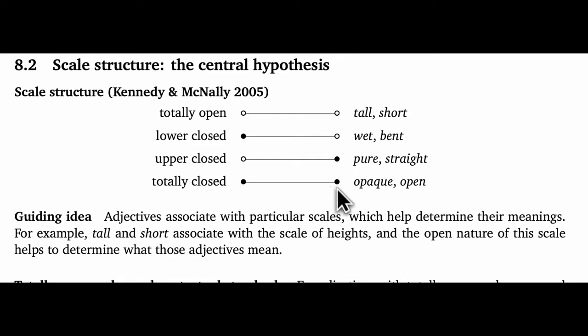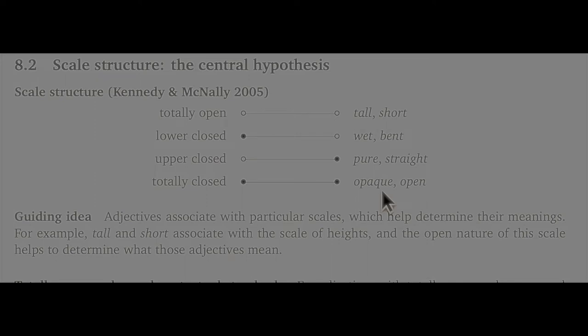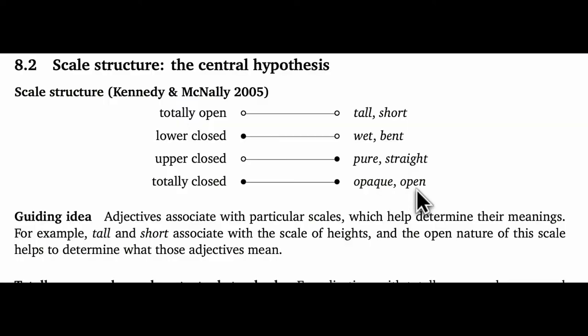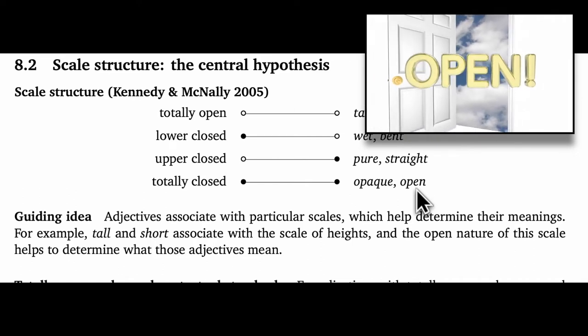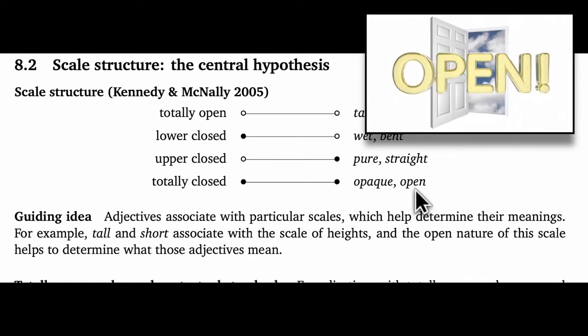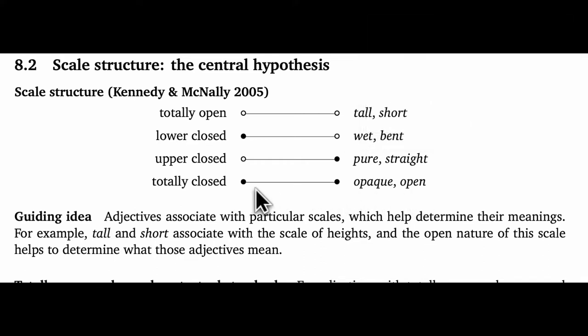Finally, the totally closed scales are closed at both ends. The associated adjectives will often appear to have sort of inherent ambiguities. For example, when you say opaque, it can mean a little bit tinted, and then you're sort of using the lower point on the scale. But, oddly, opaque can also mean totally impossible to see through. That seems very different, but that's just the upper point on the scale. I think open is the same way. An open door might be slightly ajar or completely wide open. It can be anywhere in between, of course, but the end points are likely to be very salient as interpretive points.